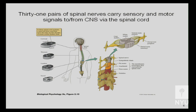The key terms to know: dorsal root, ventral root, dorsal root ganglia — these two together form spinal nerves, with pairs on each side. The bottom part of the spinal cord innervates muscles and sensory input for the legs; the middle handles the torso; and higher up gives input and output to the shoulders and arms. Your entire body is covered through these 31 pairs of spinal nerves.